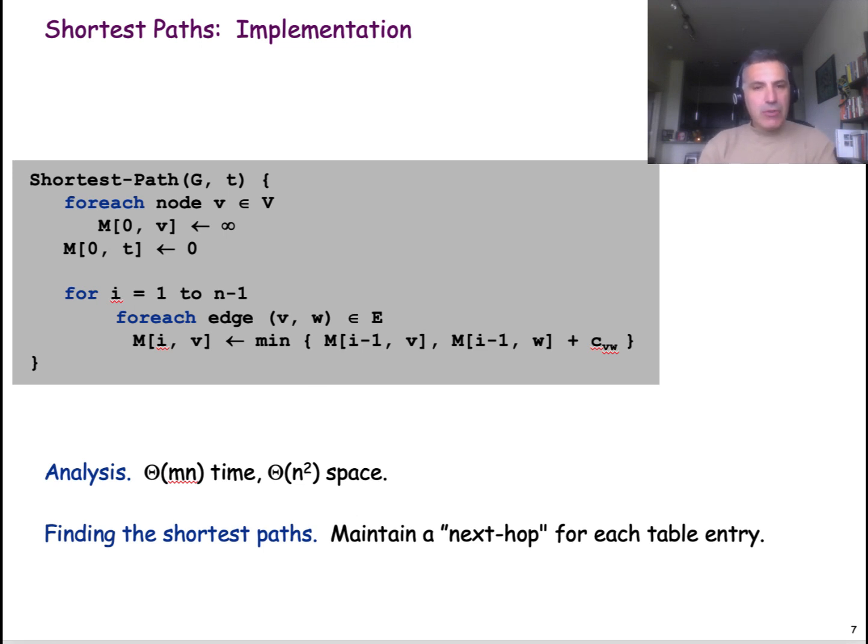So, this is a straightforward implementation of the dynamic program that we saw in the previous page. Notice here that I am using a matrix M to store the optimal solutions of all of those sub-problems. The matrix M has N rows, one row for every node of the network, and N columns, one column for each value of I from 0 all the way to N minus 1, which is the maximum possible length of a path. So, this matrix stores the optimal solution of the problem M(i, V) for all values of I and for all nodes V.